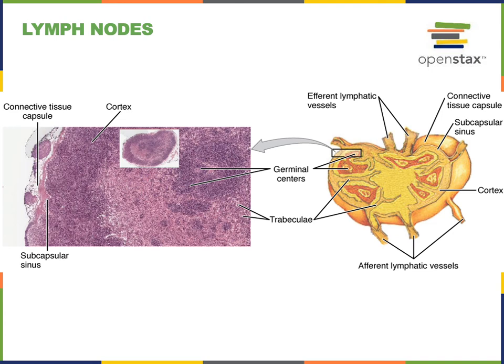The germinal centers form follicles within the cortex of the lymph node, where lymphocytes rapidly divide during the process of clonal selection to produce more lymphocytes that can defend against the same pathogen. The effector B lymphocytes then migrate from the cortex into the medulla in structures known as medullary cords, which consist of reticular connective tissue containing leukocytes, especially plasma cells. These effector cells of the antibody-mediated immunity cluster in the medullary cords and secrete antibodies that flow out through the efferent lymphatic vessels.